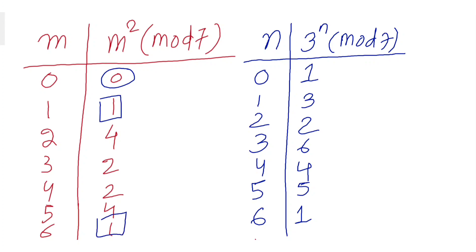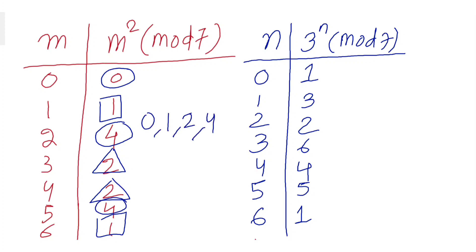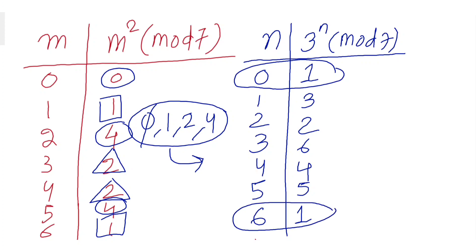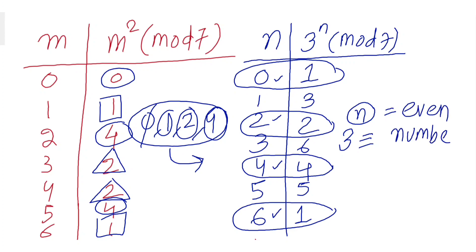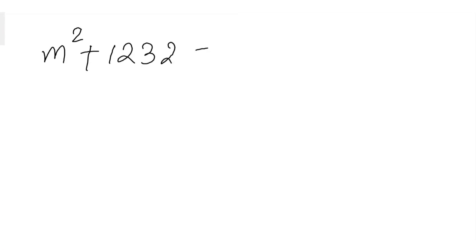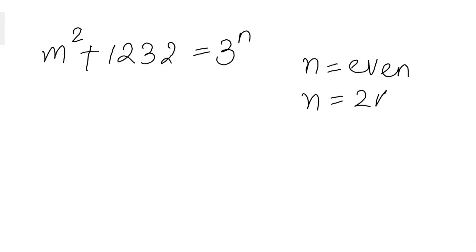We have m squared mod 7 can only be 0, 1, 2, or 4. Comparing with the residues of 3 to the power n mod 7 — which are 1, 3, 2, 6, 4, 5, 1 for n = 0 through 6 — the matching residues occur when the power is even: n = 0, 2, 4, 6. Therefore n must be an even number. Let's say n equals 2k for some natural number k.